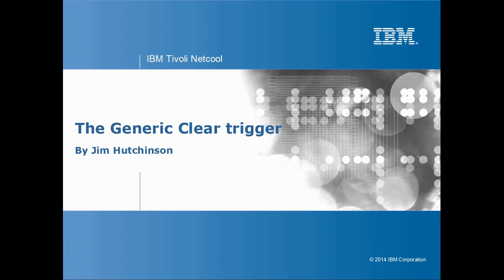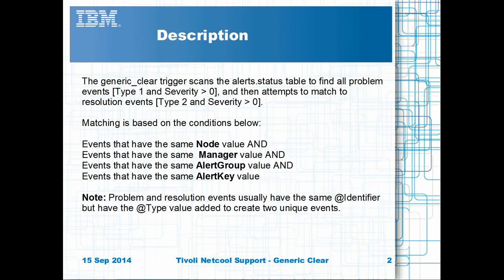Hello, this is a bite-sized presentation on the generic clear trigger's default behaviour. The generic clear is the default trigger used to clear problems from the object server. It does this by matching problem events, type 1, to resolution events, type 2.